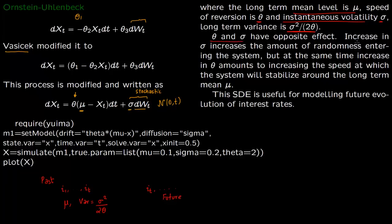So theta and sigma have opposite effects. So increase in sigma will increase the amount of randomness entering the system. But at the same time if you increase theta it will amount to increasing the speed at which the system will stabilize around long term mean mu.